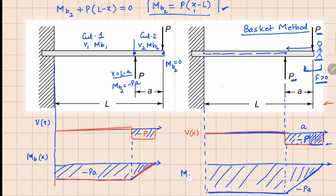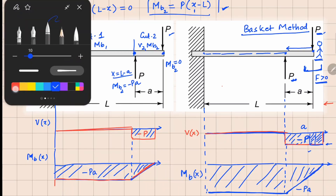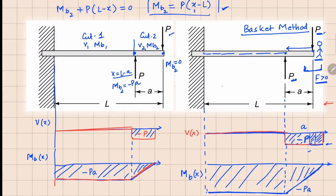So in this basket method, if there are simple forces, you just walk along the beam from the right side, collect all the positive forces to get your shear force, and then look for the area under the shear force curve — that area gives you the value of your bending moment, and you can plot it in a simple manner.